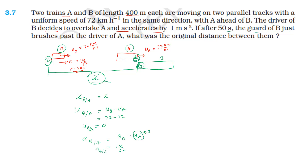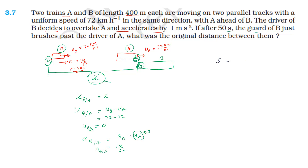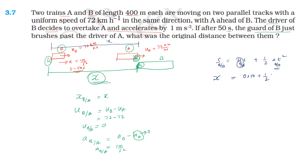Using the displacement equation S = ut + ½at², the relative displacement of B with respect to A equals the relative initial velocity times time, plus half times relative acceleration times time squared: 0 × 50 + ½ × 1 × 50².